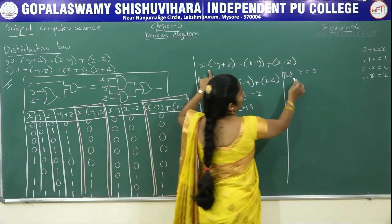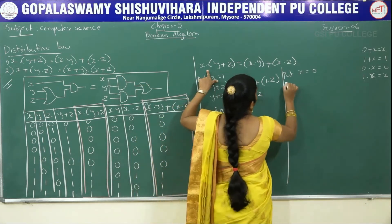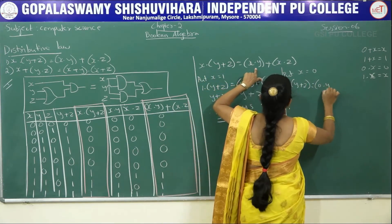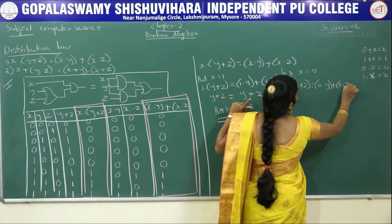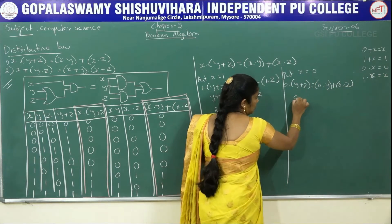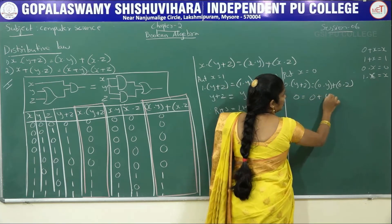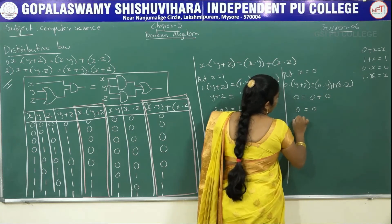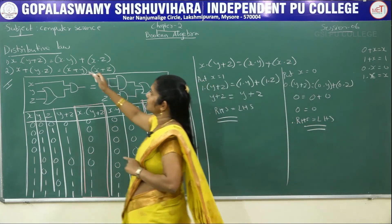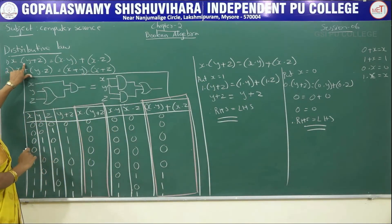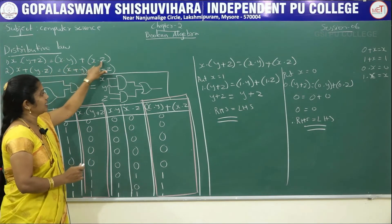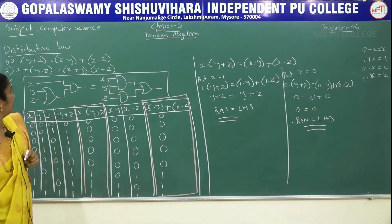Now put x=0: 0·(y+z) = 0·y + 0·z. Since 0 into any number is 0, left side = 0 and right side = 0+0 = 0. Therefore right-hand side equals left-hand side. This proves the first distributive law: x·(y+z) = x·y + x·z.